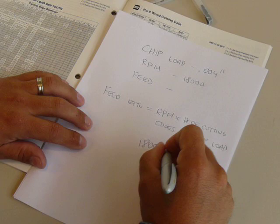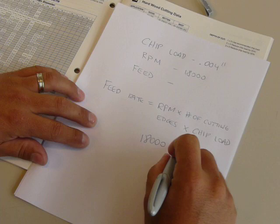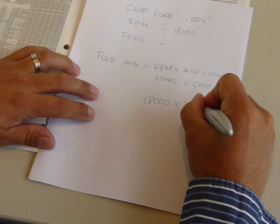We know the RPM is 18,000. And we know the chip load is 4 thousandths. Therefore, it's 18,000. Now, times the number of cutting edges. This tool is a single flute, so times one. And then times the chip load, which we know is 0.004.